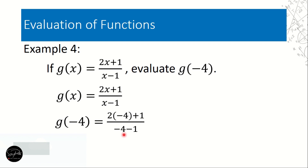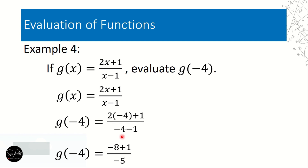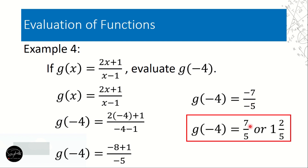Evaluate: do multiplication first in the numerator. 2 times -4 is -8, copy plus 1. Simultaneously in the denominator: -4 minus 1 is -5. Then in the numerator: -8 plus 1 is -7. So we have -7 over -5. Negative divided by negative is positive.